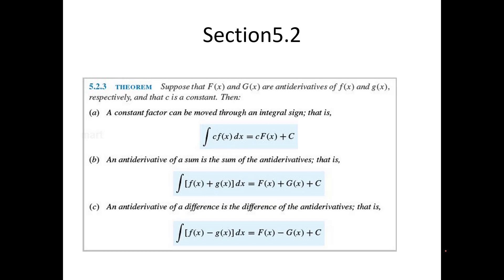There's not a whole lot we learned in section 5.2 other than a list of antiderivatives that you don't have to derive — you just should have memorized. Part A tells us that if we're ever trying to find the antiderivative of a constant times a function, we can just find the antiderivative of the function and then multiply it by the constant. That should make sense because when you take the derivative of a constant times a function, you just take the derivative of the function and then multiply by the constant.